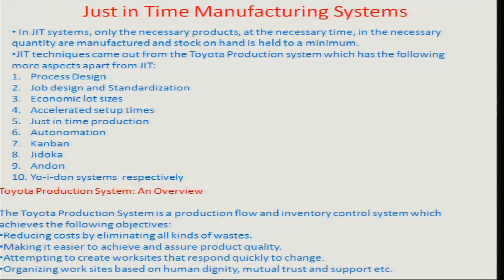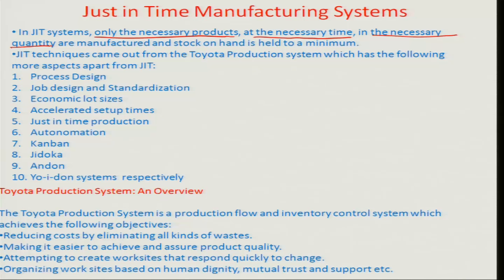As the name suggests, JIT or just-in-time refers to: what are the necessary products — that is one component; what is the necessary time for which this product has to be in place; and how much of this product is really needed. So there are three aspects: what is the product, when is it needed at a particular place, and how much quantity is involved.